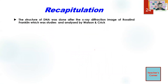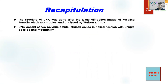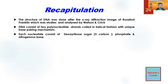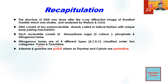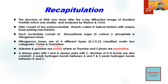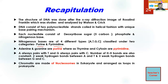Let us recapitulate quickly what we have covered. The structure of DNA was worked out after X-ray diffraction images by Rosalind Franklin and Chargaff's base ratio data. Watson and Crick understood that DNA is double helical based on these two observations. DNA consists of two polynucleotide strands coiled in a helical fashion with unique base pairing. Each nucleotide consists of deoxyribose sugar, phosphate, and nitrogenous bases — adenine, thymine, guanine, cytosine — classified under purines (double ring) and pyrimidines (single ring). Adenine always pairs with thymine and guanine with cytosine. Adenine bonds with thymine by two hydrogen bonds and guanine with cytosine by three hydrogen bonds. Chromatins are made of nucleosomes in eukaryotes and nucleoid loops in the case of prokaryotes.